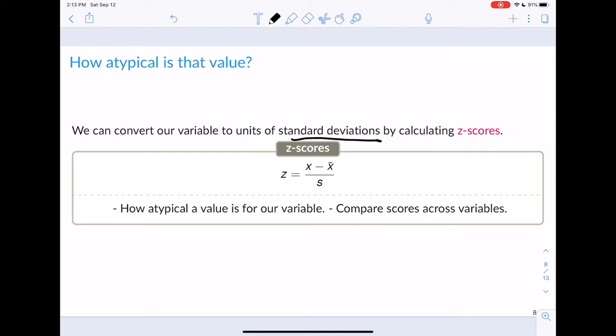To calculate the z-score, we take the value, that's what x is - x is our data value. We minus the sample mean and divide it by the sample standard deviation. That will give us a z-score. This represents how atypical a value is for a variable and allows us to compare scores across variables.